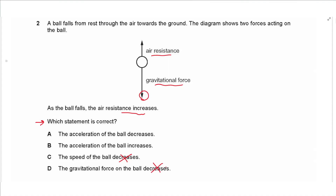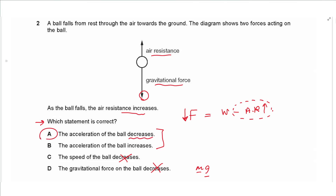The gravitational force on the surface is constant (mg), since mass and gravitational field strength are constant. The resultant force equals weight minus air resistance. As air resistance increases, the resultant force decreases. Since acceleration is proportional to the resultant force, as the resultant force decreases, acceleration also decreases. So the answer is A.